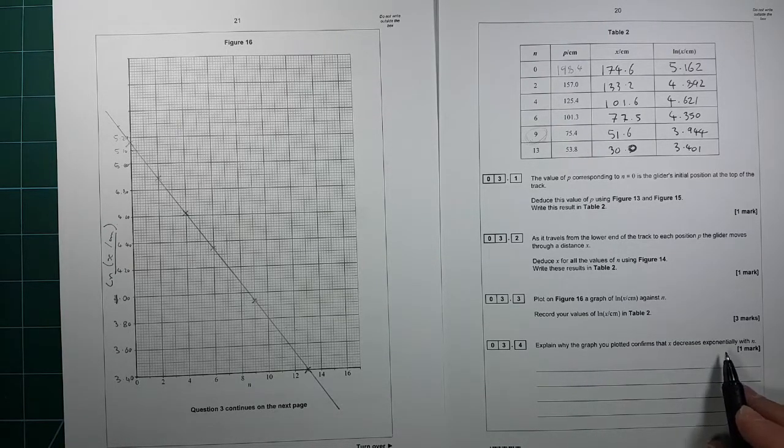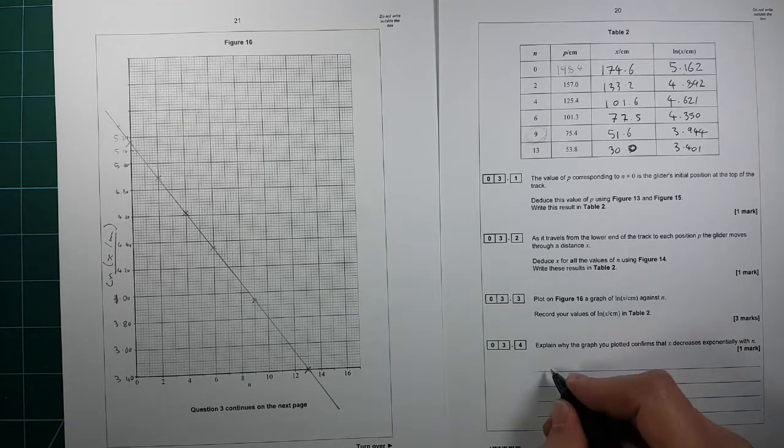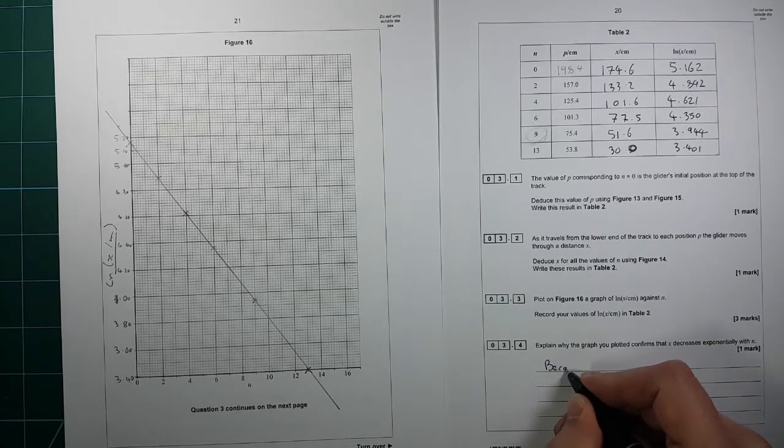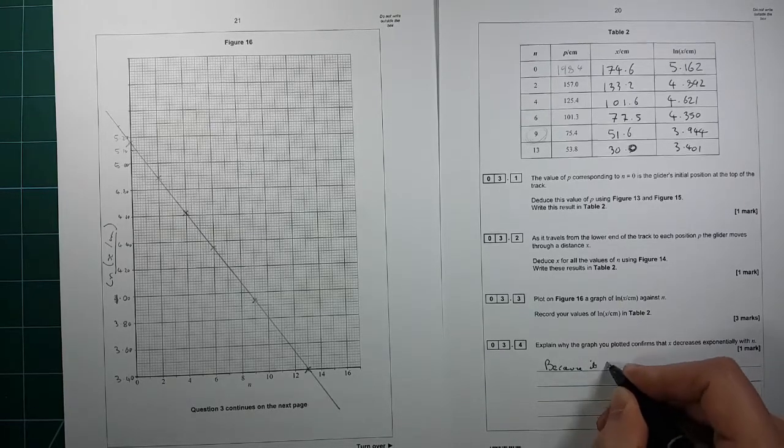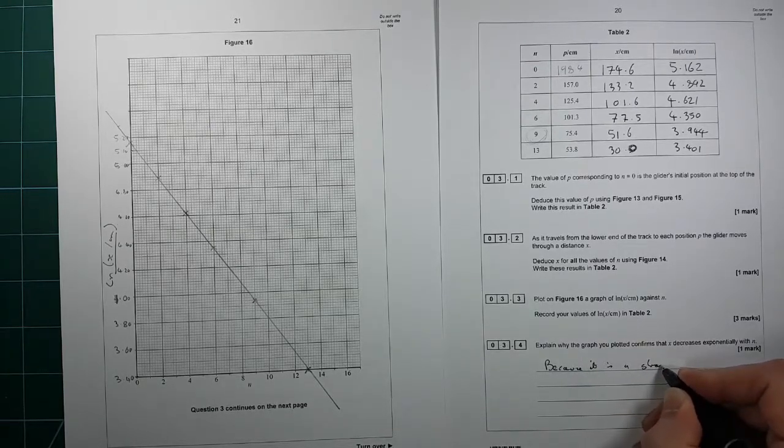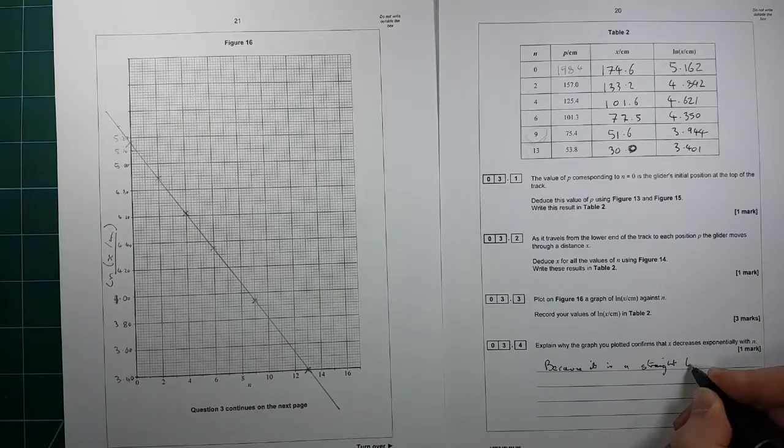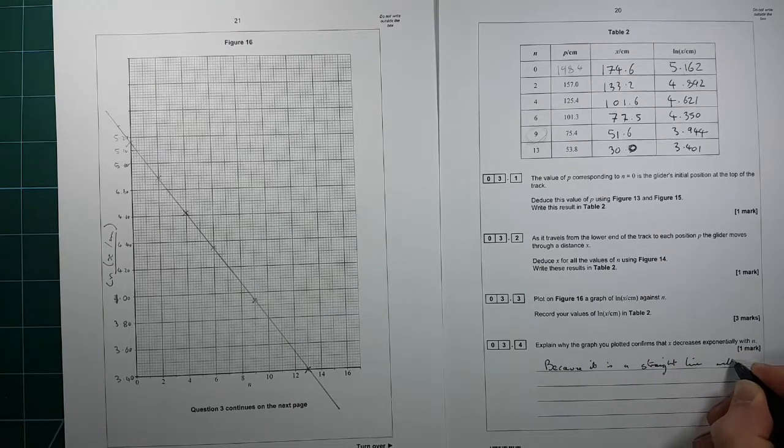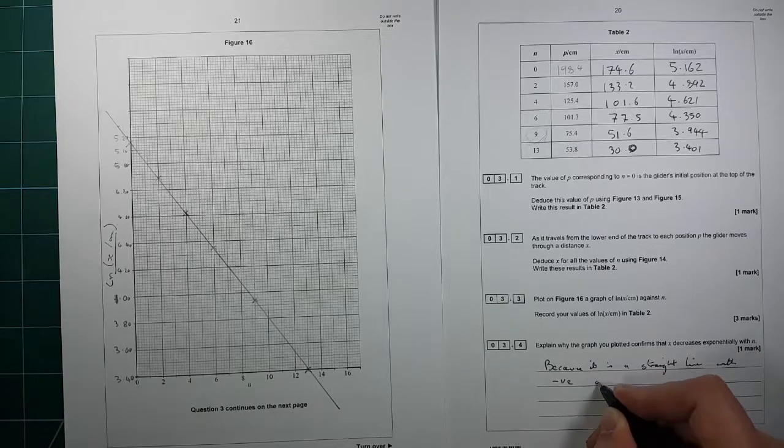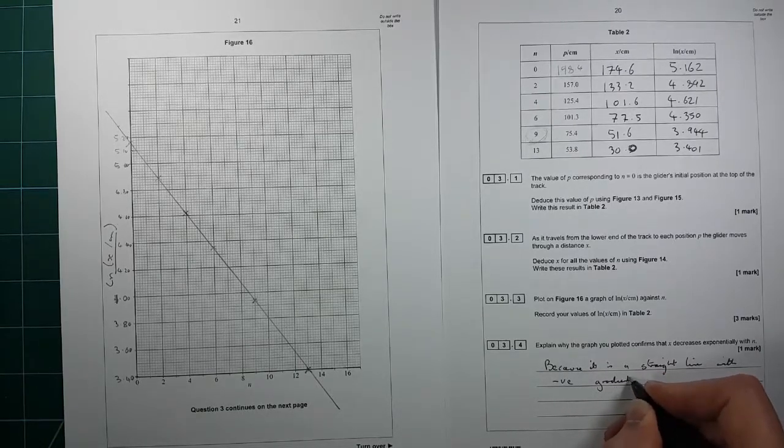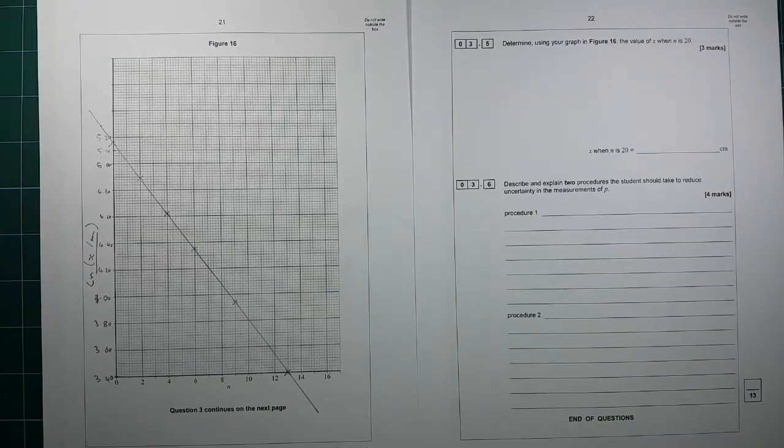Explain why the graph confirms that x decreases exponentially with n. That's because it is a straight line with negative gradient.